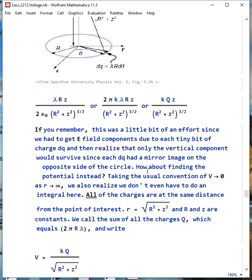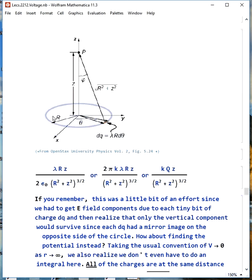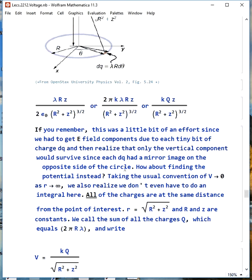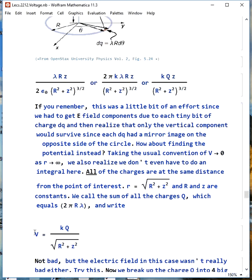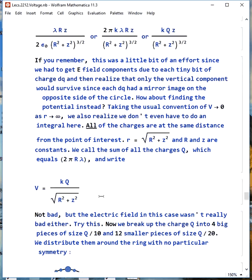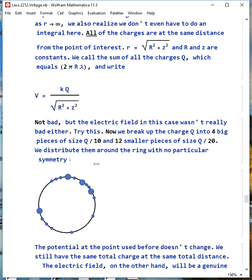What about if we wanted to find the potential instead? Again, if we say V equals 0 at infinity, we don't even have to do an integral here. All the charges are at the same distance from the point of interest. They're all little r away, square root of big R squared plus z squared. If they're all there, we can say the sum of all charges is Q, which is also 2 pi R lambda, and we can say V is kQ over square root of R squared plus z squared. So voltage is pretty easy to find. Now, the electric field wasn't really that bad to find in this case, so it may not look like it's a big difference.